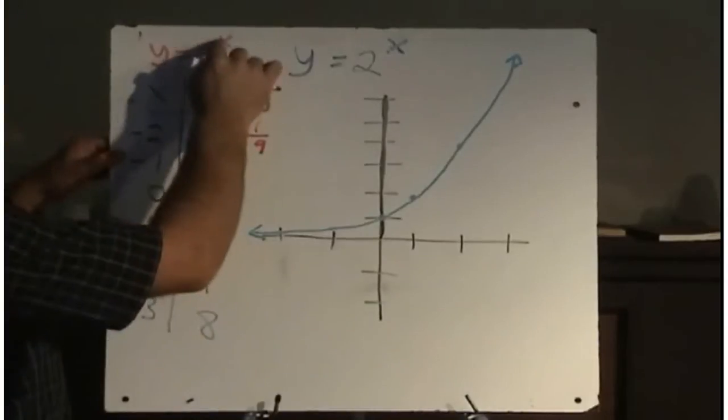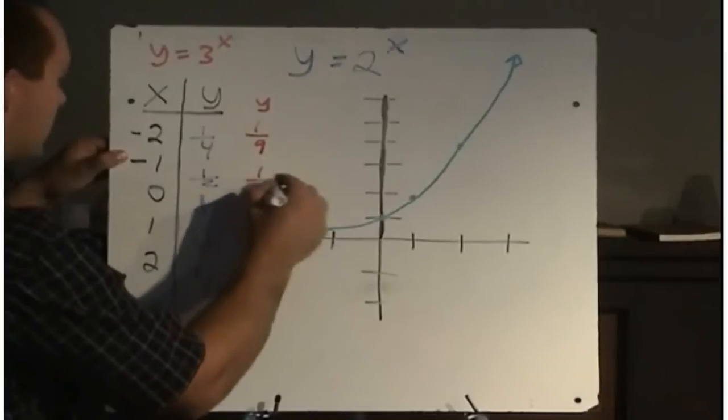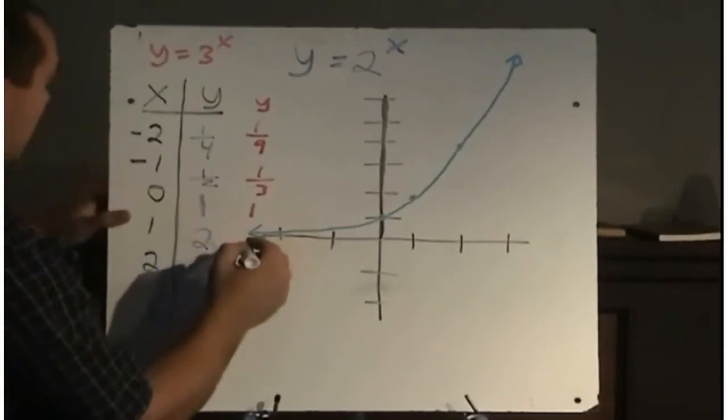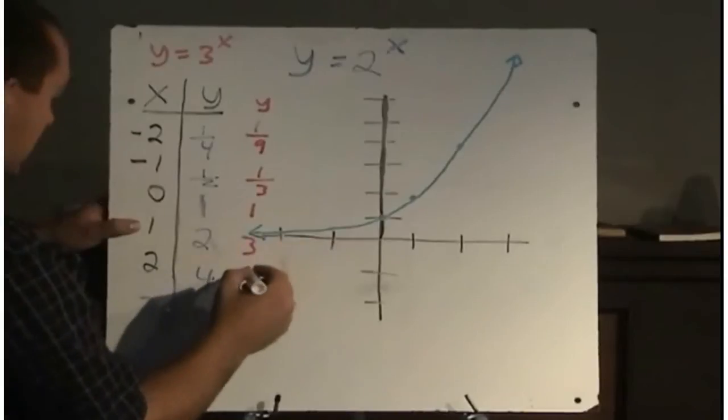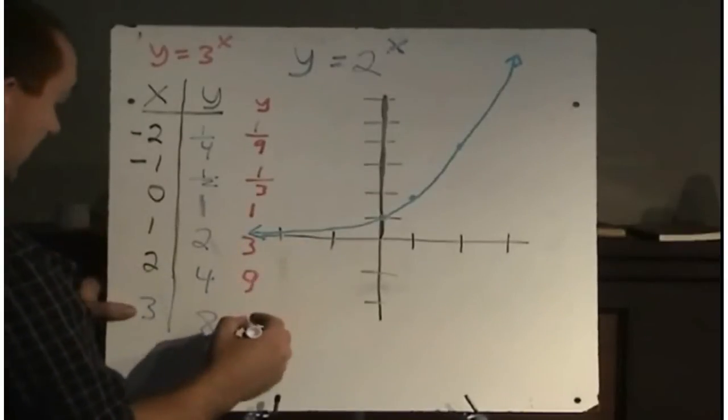Substituting in negative 1, negative means reciprocal of the base, so we're at 1 third to the power of 1, which is still 1 third. Any number to the power of 0 is 1. 3 to the power of 1 was 3. 3 to the power of 2 is 9. And 3 to the power of 3 is 27.